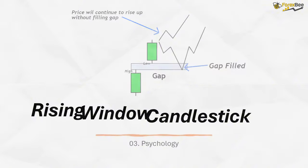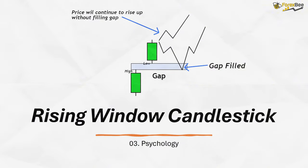From a psychological standpoint, the rising window reflects strong bullish sentiment in the market. The gap up signifies increased buying pressure as traders expect higher prices, and the continuation of the bullish move further confirms that buyers are in control.